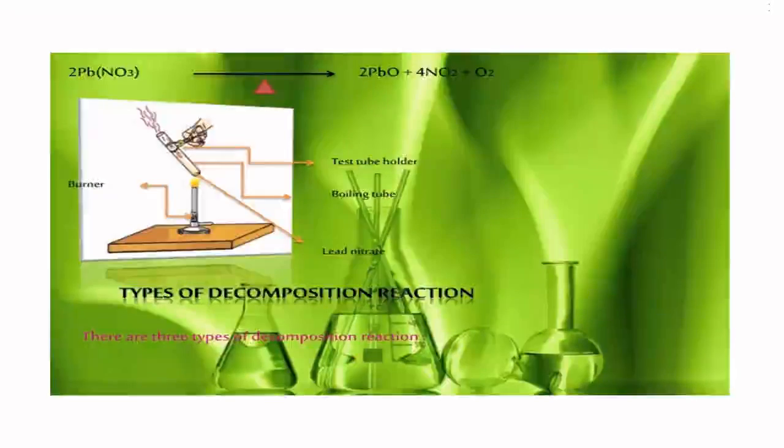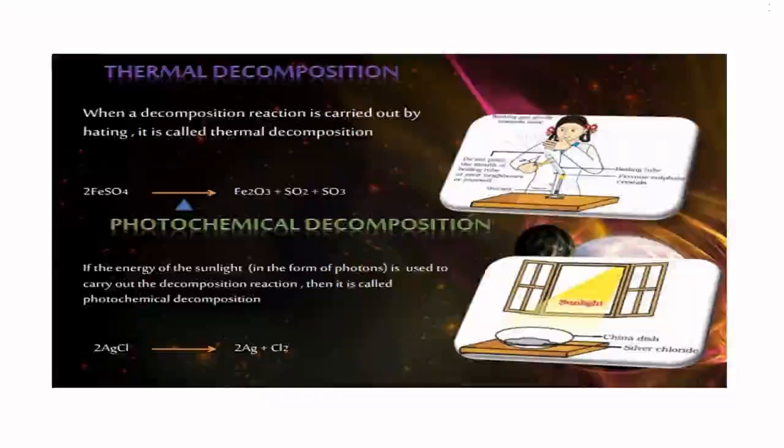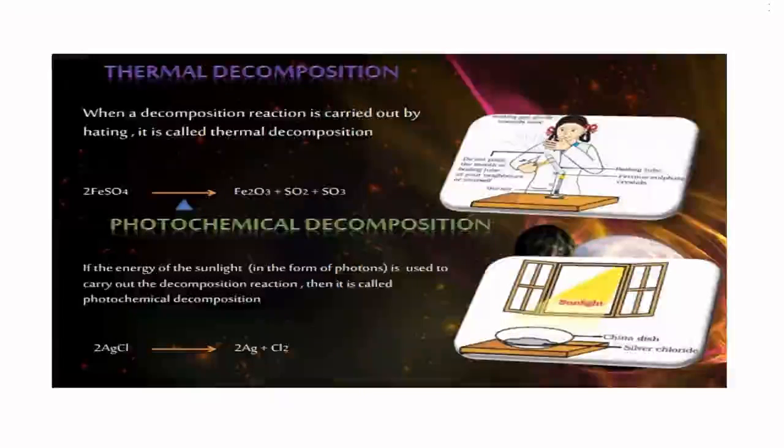Types of decomposition reaction: There are three types of decomposition reaction. First one, thermal decomposition. When a decomposition reaction is carried out by heating, it is called thermal decomposition. Example: iron sulfate on heating: 2FeSO4 on heating gives Fe2O3 + SO2 + SO3.